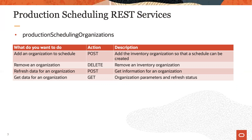For example, you can add an inventory organization as a scheduling organization, and of course you can remove that organization again. Refreshing a scheduling organization retrieves current DFF and EFF — descriptive flex field and extensible flex field data — for work definition operations and item attribute groups. This was described in detail during Lessons 3 and 4.